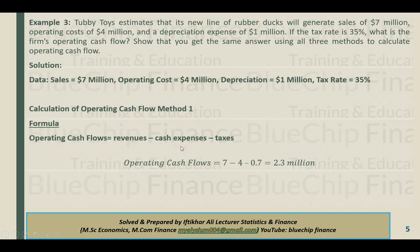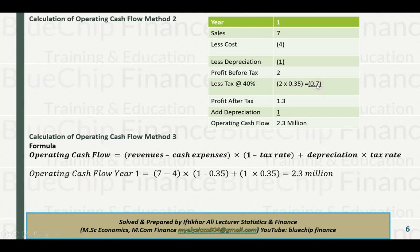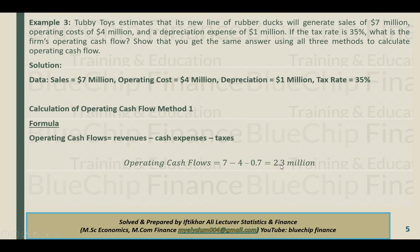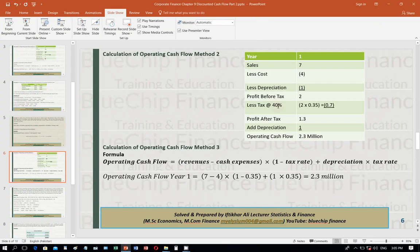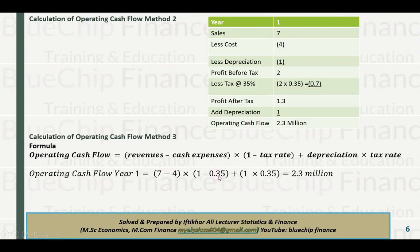Formula 1: revenues minus cash expenses minus taxes. Revenues 7 million, cash expenses 4 million, taxes 0.7 million — result is 2.3 million. Formula 3: (revenues minus cash expenses) times (1 minus tax rate) plus depreciation times tax rate. Here tax rate is 35%, not 40%. So (7 minus 4) times (1 minus 0.35) plus 1 million times 0.35 — answer is the same: 2.3 million.